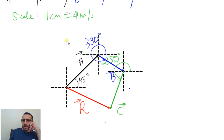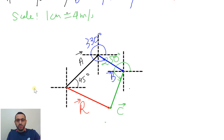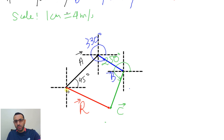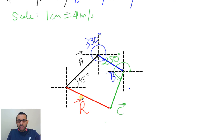Now the question is to find the resultant. To find the resultant you have to find the magnitude and the direction. The magnitude is found by measuring the length of this arrow in centimeters, then using the scale to convert it to meters per second. The direction is found by measuring the angle that R makes with the positive x-axis going counterclockwise.